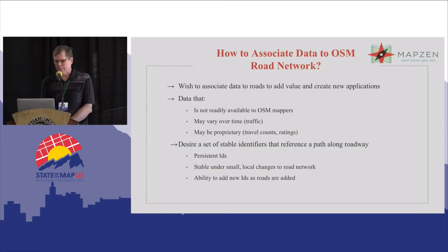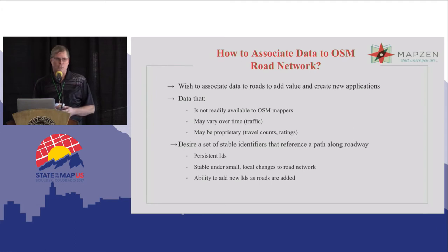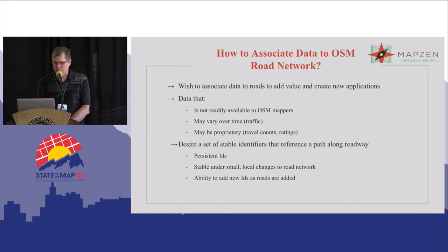The problem we're trying to solve is how can we associate external data to the OpenStreetMap road network and make it usable for routing applications and other creative and new applications. Some of this data that we want to associate might not be readily available to OpenStreetMap mappers, and some of it might vary over time — things like traffic and parking, not readily something you can put in OpenStreetMap directly. Other data might be proprietary, such as a company gathering travel counts and wanting to associate it to a routing engine.